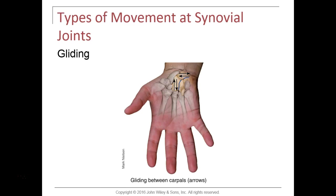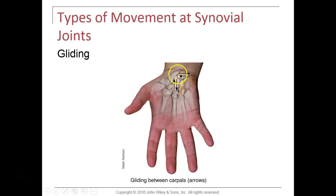The different types of synovial joints can be classified based on the type of movement. A gliding movement occurs in your wrist, where the eight carpal bones glide past one another. They don't allow angular movement but they allow back-and-forth and up-and-down movement depending on which bones we're talking about. That's called gliding movement.